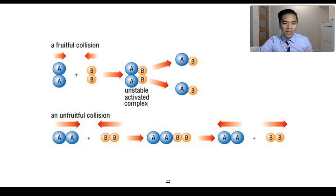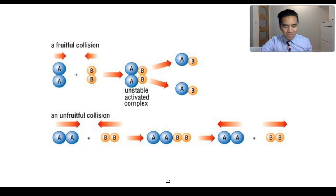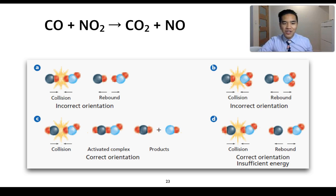We talk about there being possibly successful or unsuccessful collisions - referred to as fruitful and unfruitful. A fruitful collision involves a case where reactants A and B are colliding in the correct orientation, which allows for the eventual formation of products AB. An unsuccessful or unfruitful collision occurs when reactants A2 and B2 have a different orientation - colliding side on - and this side-on collision isn't the correct orientation, so we just get a rebounding of A2 and B2.